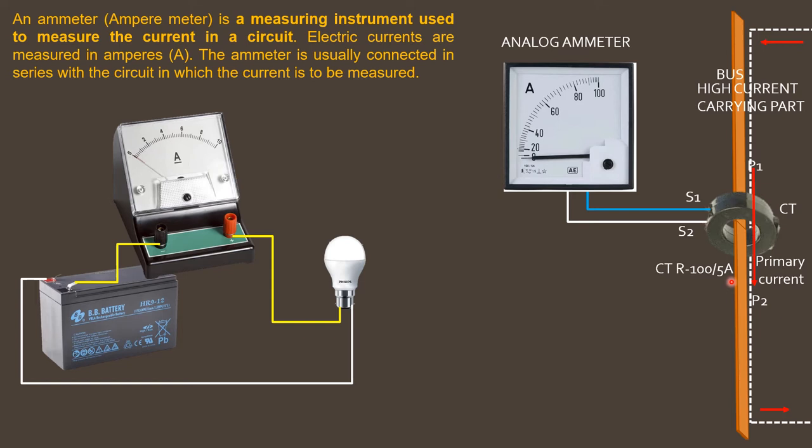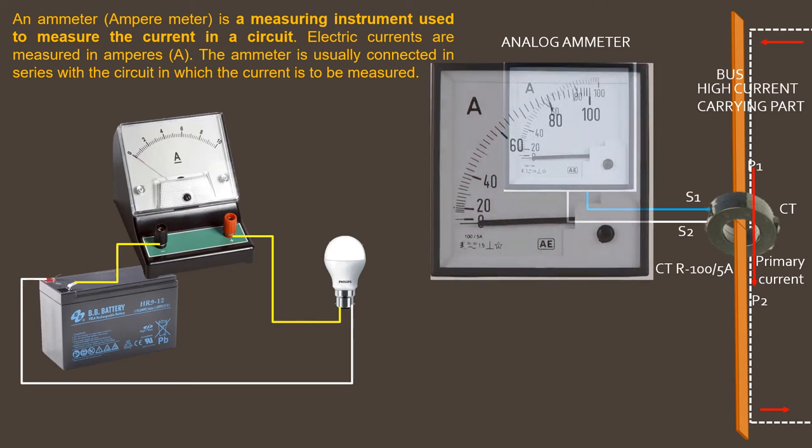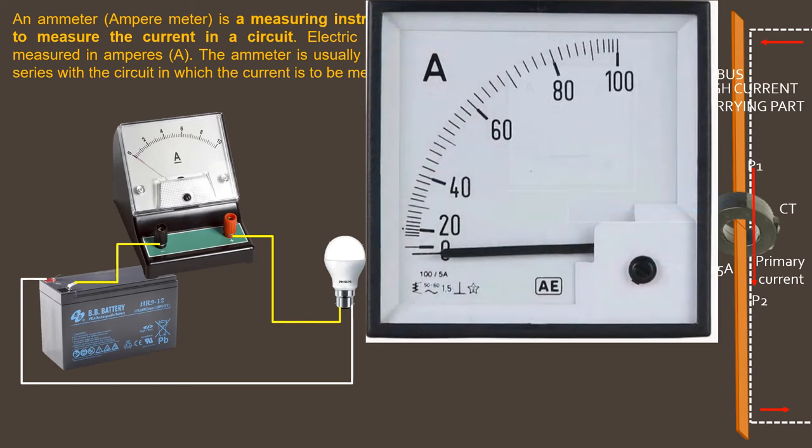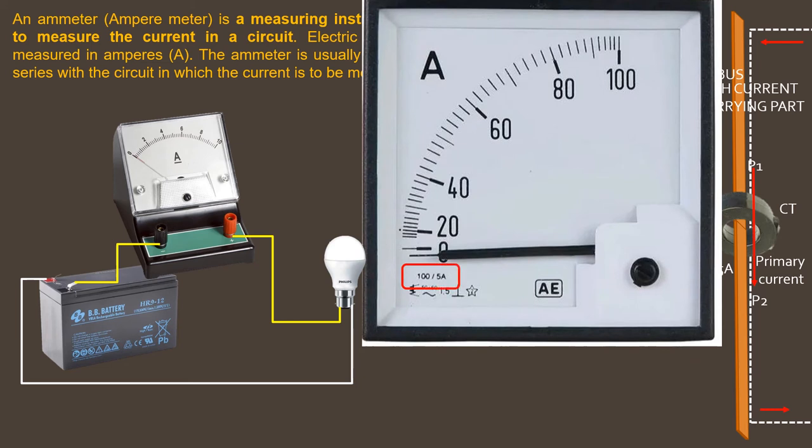The meter has also incorporated a CT within its own circuit, known as meter CT. It has also a CT ratio. Every ammeter is marked with a meter CT ratio. Here the CT ratio is 100 by 5 ampere.